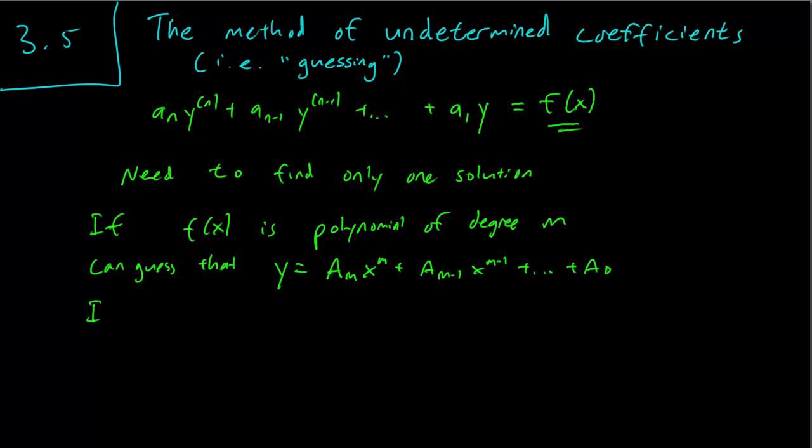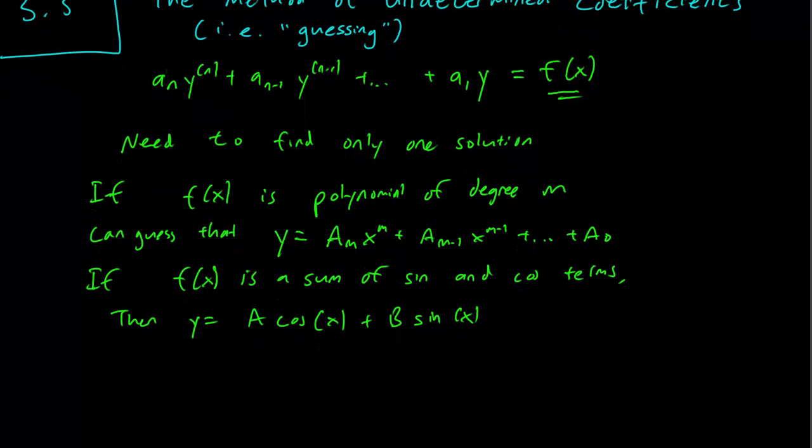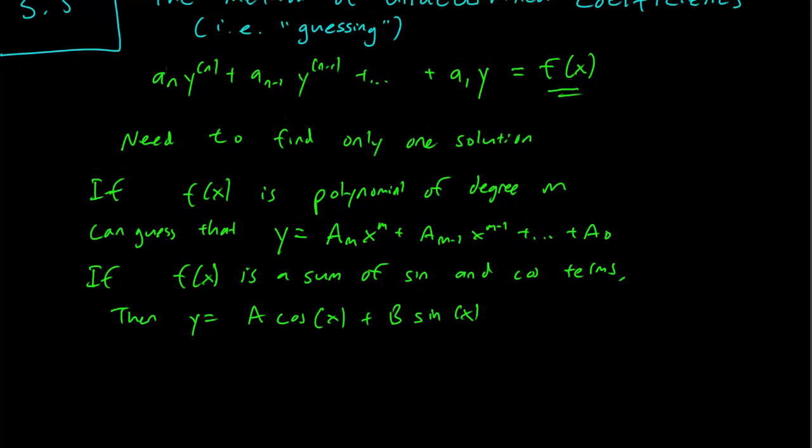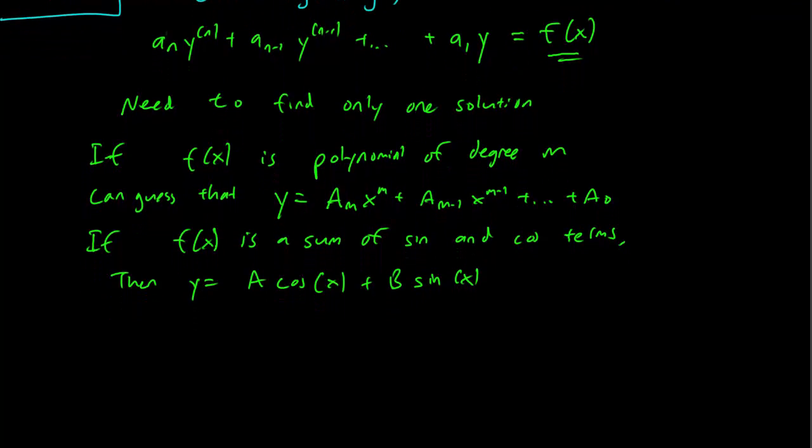Another example of this method is, if f(x) is a sum of sines and cosines, then y is also a sum of sines and cosines, say A cos(x) plus B sin(x). And that's also a reasonable guess, because if you take the derivative of sin, you get cos, cos gives minus sin, and it's reasonable that the solution will have the same form as f.